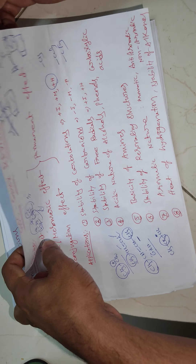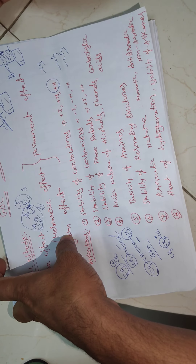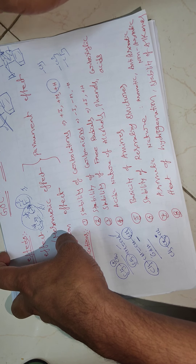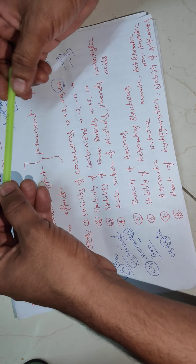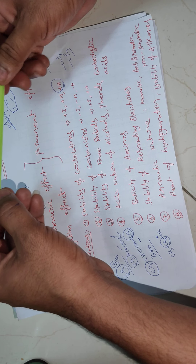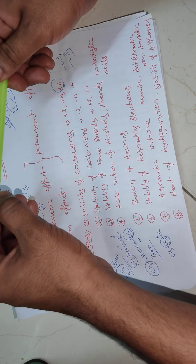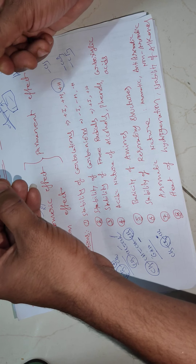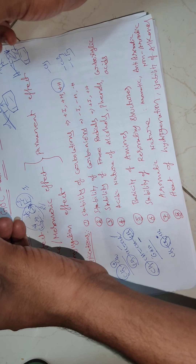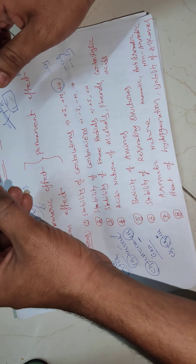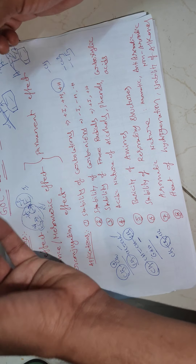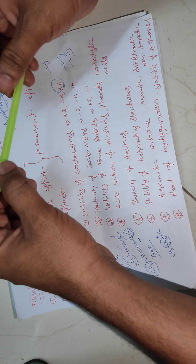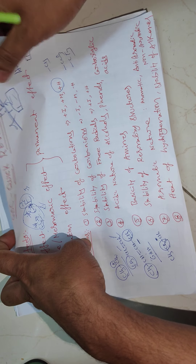For stability of resonating structures, we follow these rules: first, among all resonating structures, the neutral structure is more stable. Second, the structure in which every atom has an octet configuration is more stable. Third, the structure with negative charge on the more electronegative atom and positive charge on the less electronegative atom is more stable. Based on these rules, we can identify the stability of different resonating structures.